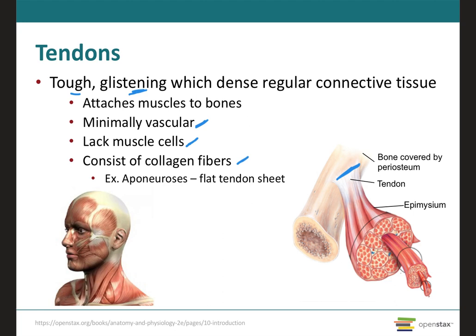Just like the muscle belly, the tendons also display a great variety of shapes. Some are going to be long, others are going to have a rope-like structure, while others are going to be arranged in this flat sheet that's called an aponeurosis — as we can see on this image, which represents the epicranial aponeurosis. So epi meaning on top, cranial on the cranium, and it's this sheet of tendon.